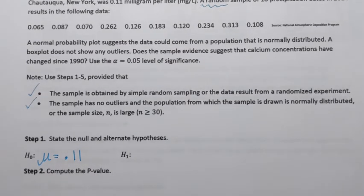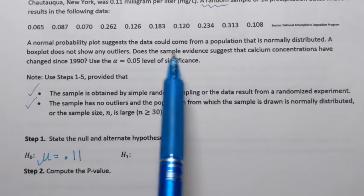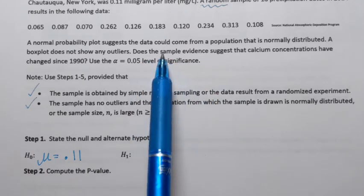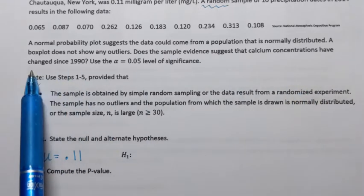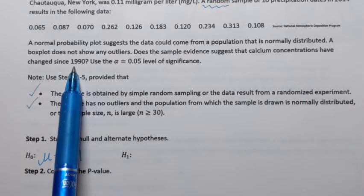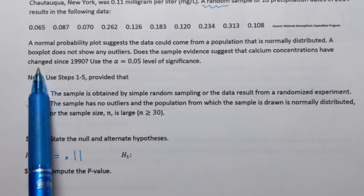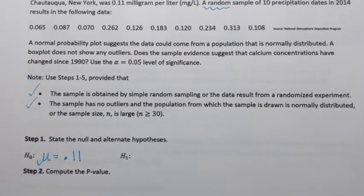And then the alternate hypothesis is the one that states that that value has changed somehow. A lot of times it says that it has decreased or increased. Well in our example, the question is: does the sample evidence suggest that the calcium concentrations have changed since 1990? See how it doesn't say have increased or have decreased? It just says have changed.